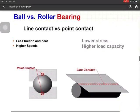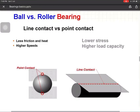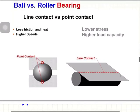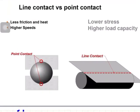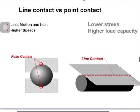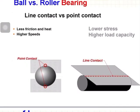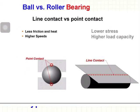With point contact there is less friction and less heat, enabling higher speeds — you can see the contact between balls and the raceway is a point contact. With line contact, stress is lower because the area is higher, giving a higher load carrying capacity. This is why roller bearings are preferred for heavy loads.